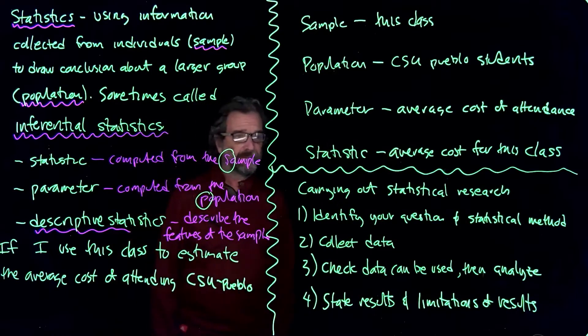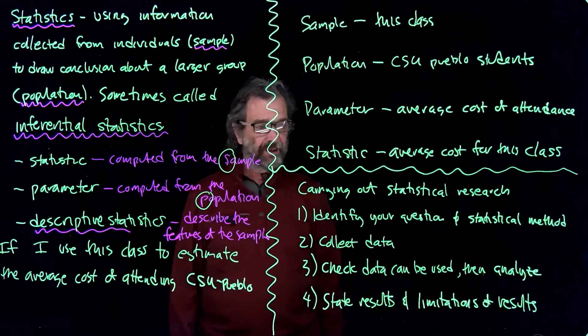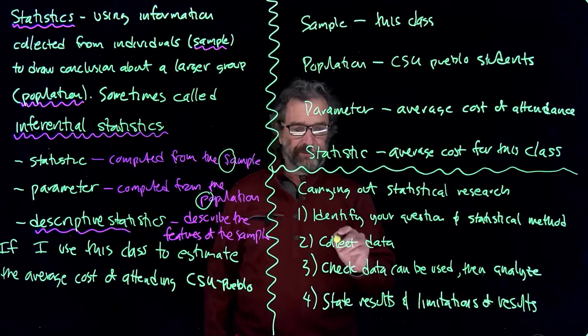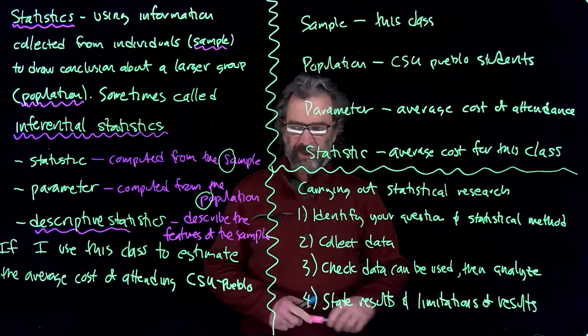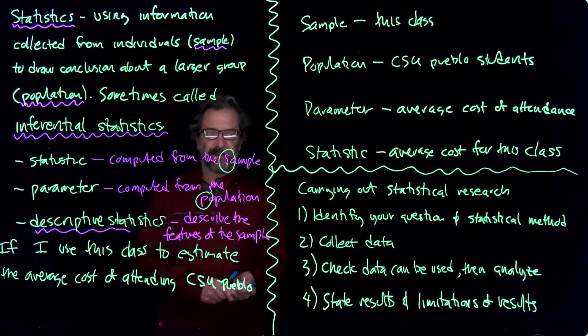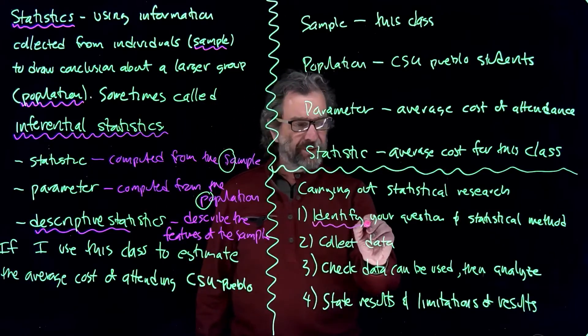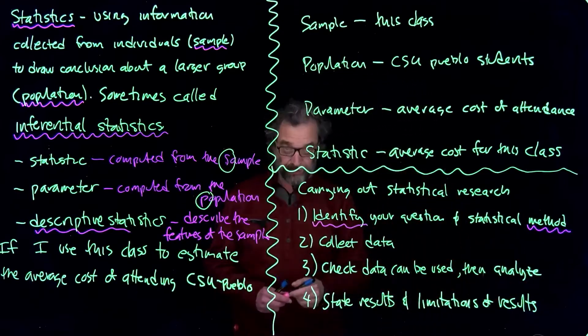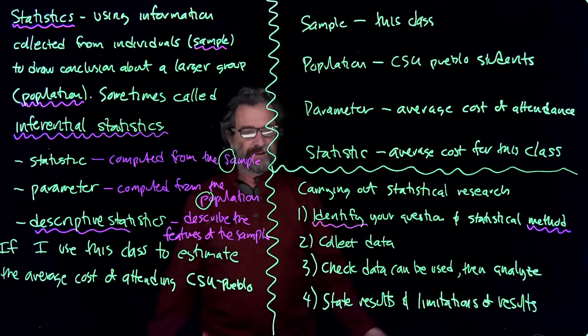And then over here is just the basic steps for carrying out some kind of research project. Identify your question and statistical method. So sometimes people don't do that. They just go collect some information and then figure out what they want to do with it later. You're better off not doing that. Identify your question and figure out what method you're going to use. Otherwise you're going to have data you may not be able to do anything with because you haven't decided how you're going to analyze it.